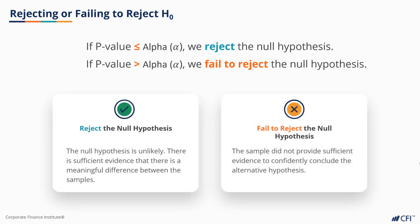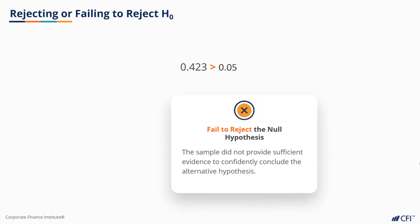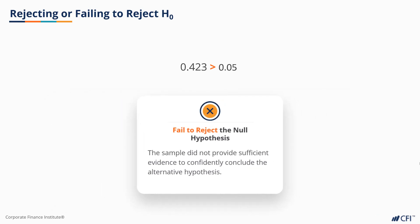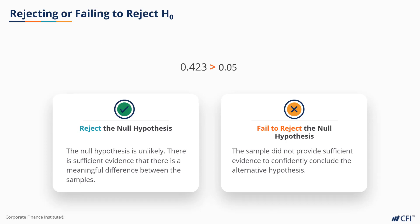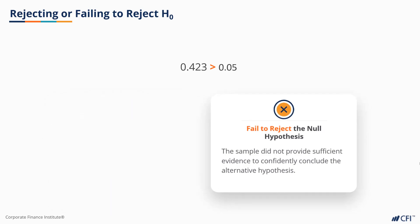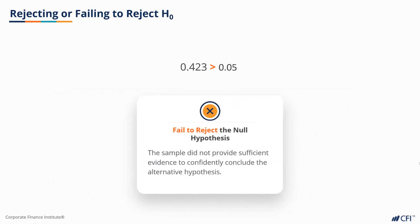In this case, our alpha value was 0.05 and our p-value was 0.423, so we fail to reject our null hypothesis. If the null hypothesis was true, we'd expect values this extreme about 42% of the time. That's fairly common, so I don't feel confident that the differences observed between the means of the samples is significant.